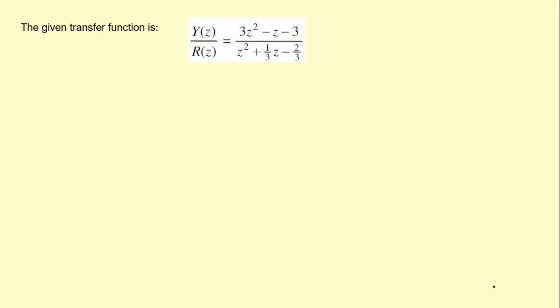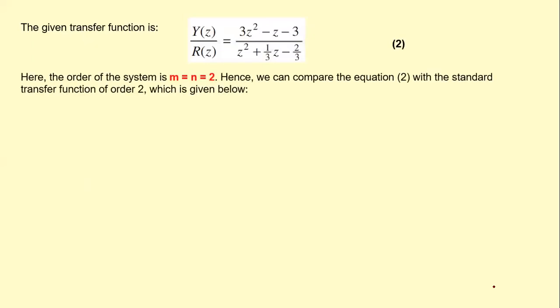The given transfer function is equation number two. If we look at it, the order of the numerator is two and the order of the denominator is also two, so m is equal to n is equal to two. This is a second order system, and for a second order system the standard transfer function form is equation number three.